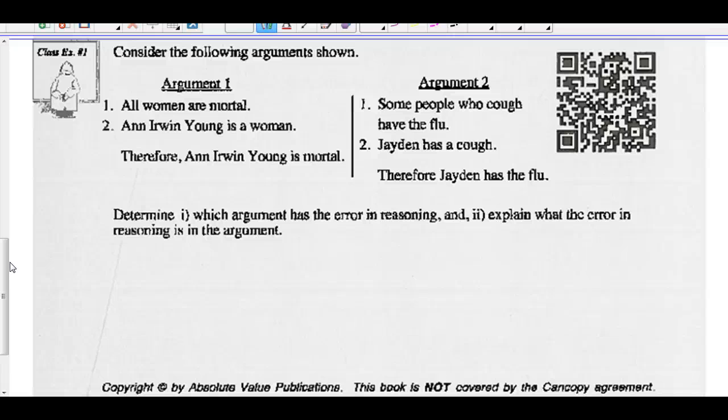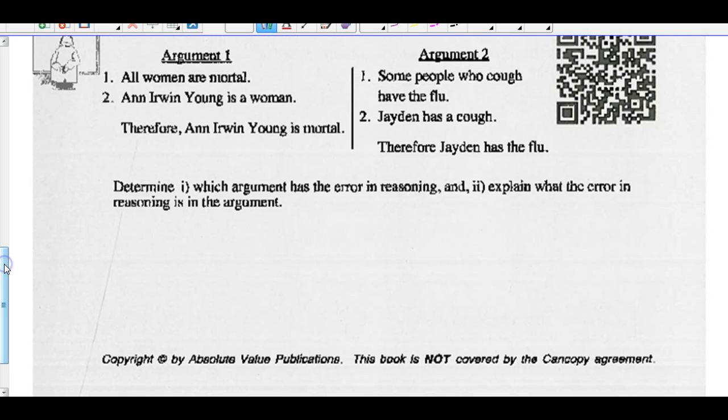Argument 2. Some people who cough have the flu. Jayden has a cough. Therefore, Jayden has the flu. Determine, firstly, which argument has the error in reasoning, and secondly, explain why the error in reasoning is in the argument. Okay. So think about it. See if you can answer this one. You can pause it.